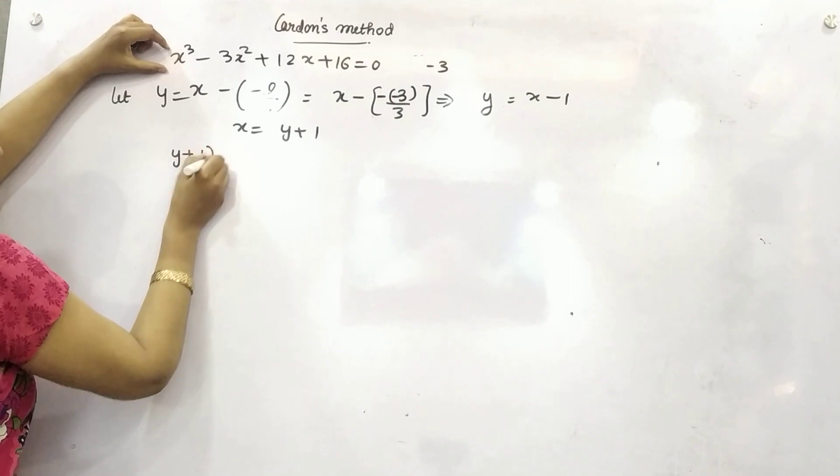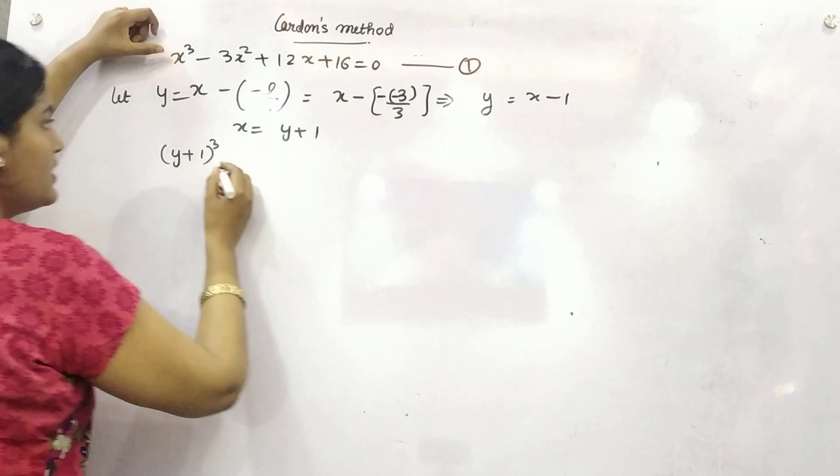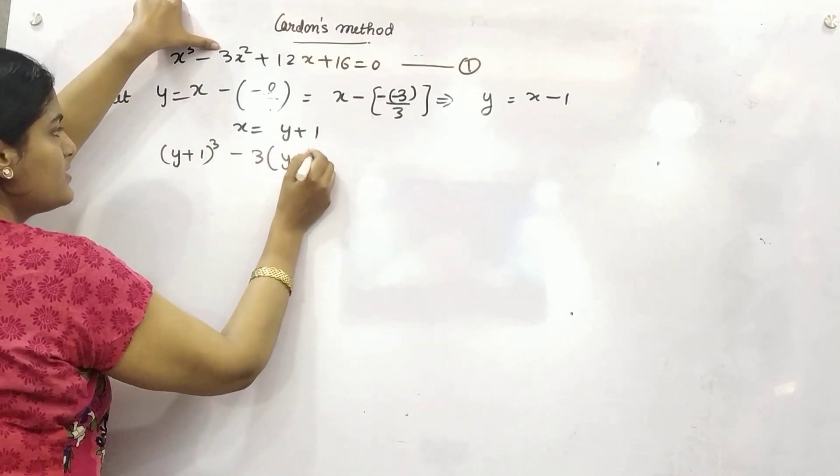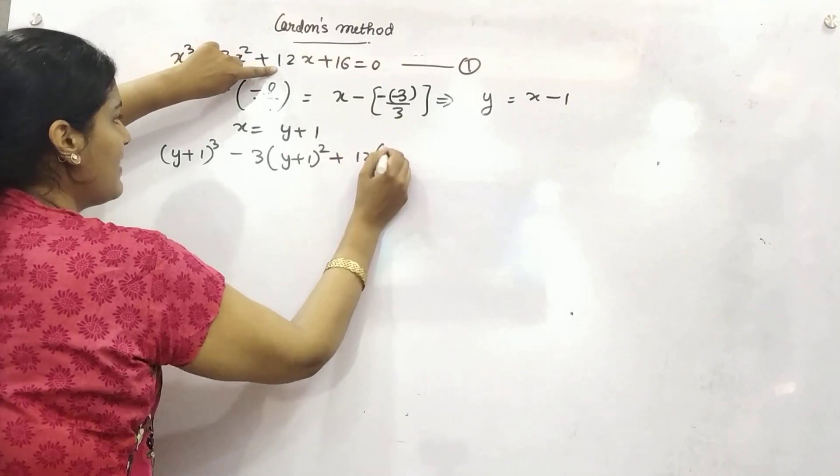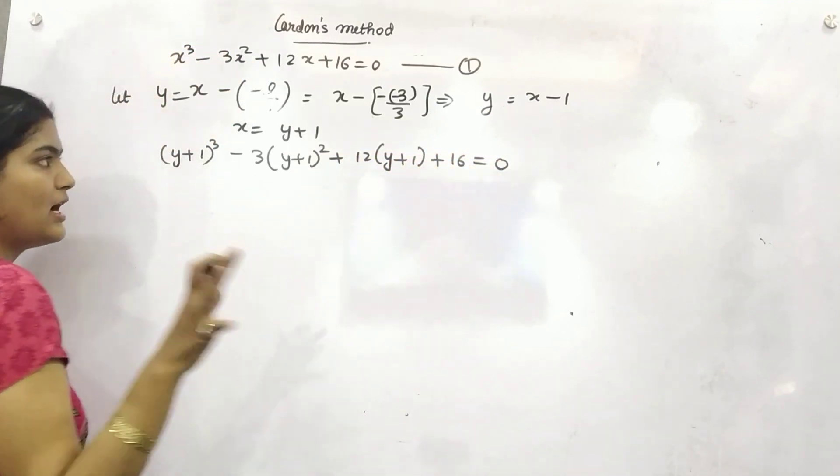If you substitute this value into this, your next step is to substitute this value here. So y plus 1 whole cube. This is your main equation by the way. So x cube minus 3(y plus 1) whole square plus 12(y plus 1) plus 16 equals 0. Now open this.